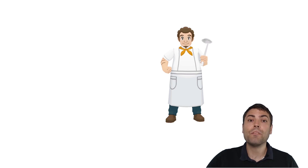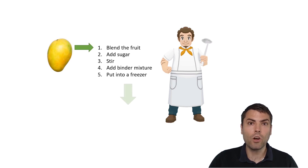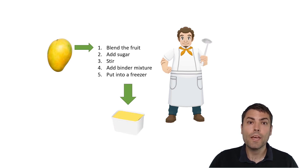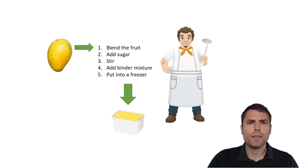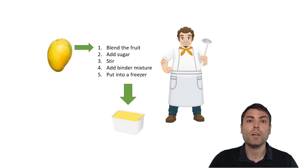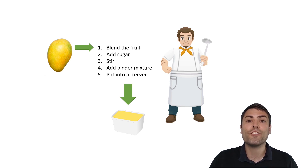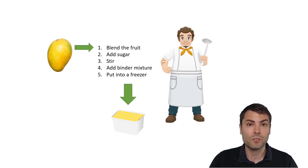After that, he takes another fruit, for example mango, and he does all the same steps manually and proceeds to the next fruit. Now he realizes that doing this manually will take too much time, so he decides to create a machine that will automatically do the five necessary steps no matter which fruit we put into it.